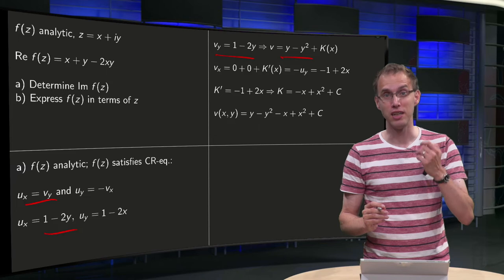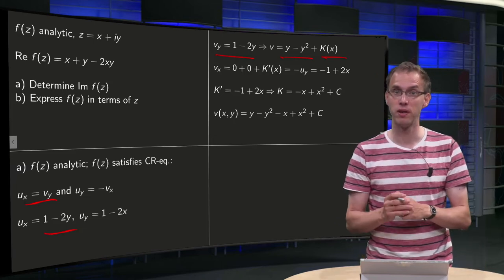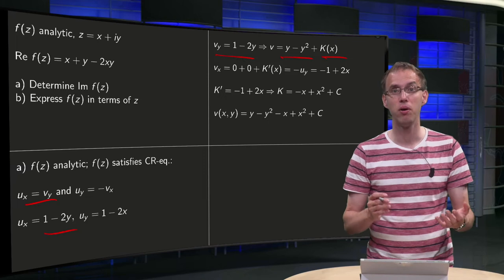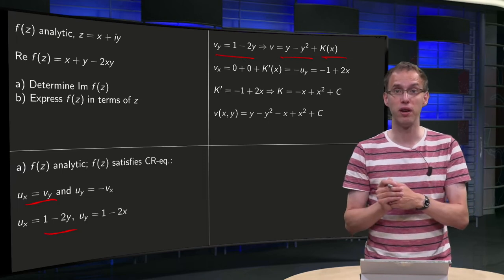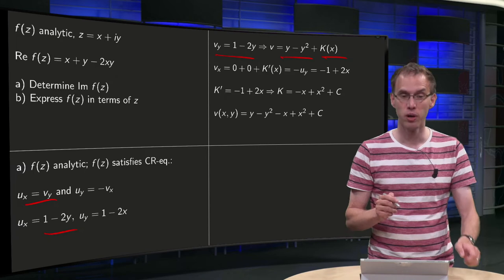Now the tricky part: this constant may depend on x, because we are taking partial derivatives. So we have our v now, but up to a constant depending on x. So how are we going to determine K(x)? Well, we use our second Cauchy-Riemann equation.